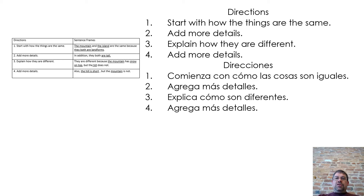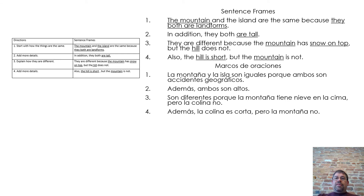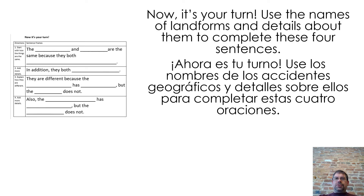To add more details, here are some sentence frames: 'The mountain and the island are the same because they are both landforms. In addition, they both are tall. They are different because the mountain has snow on top but the hill does not. Also, the hill is short but the mountain is not.'